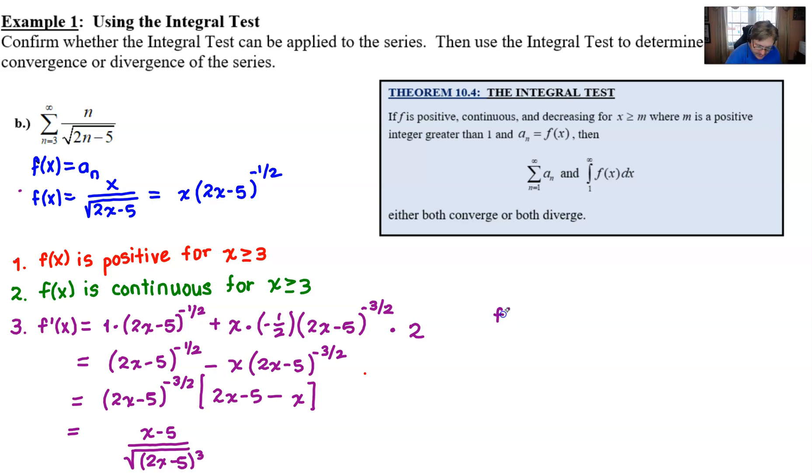So I'm going to find my critical numbers. So f prime is equal to zero only when the numerator is zero. And that would be when x is five. And then f prime is undefined. Well, we've talked about this just a little bit already. That's going to occur when that denominator is equal to zero. And if you cut right to the chase, that denominator is only zero if the 2x minus 5 is zero. The square root and the cube really don't have a big play in that. But the problem with this is that x is equal to five halves, which we can disregard because our domain for this problem doesn't really start until n is three, which translates to when x is three. So we only have the one critical number at five. So we better do some testing here.